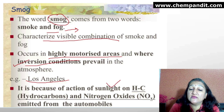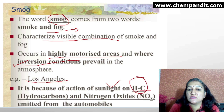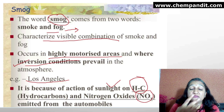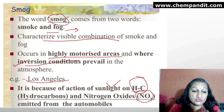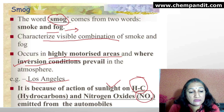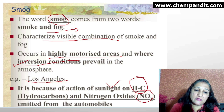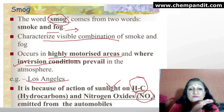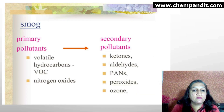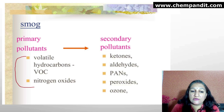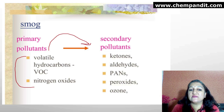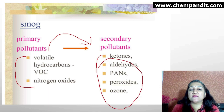What happens with sunlight? VOCs and nitrogen oxides from automobiles react in the presence of UV light and produce nitrogen dioxide, ozone, peroxyacyl nitrate (PAN), aldehydes, and ketones. This whole mixture is called photochemical smog. It has a brown haze appearance. The primary pollutants — VOCs and nitrogen oxides — undergo photochemical reactions to form this mixture of secondary pollutants.